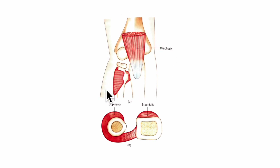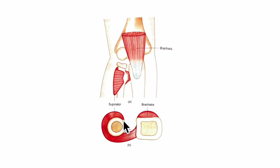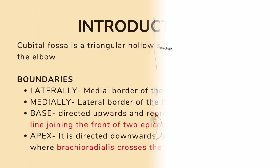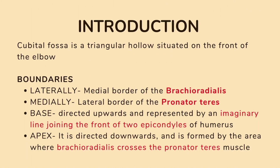Looking at the floor of the cubital fossa, in the surface view we can see that the floor is formed by the brachialis muscle and the supinator muscle that surrounds the upper part of the radius. In the cross-sectional view you can also see the supinator surrounding the upper part of the radius and the brachialis muscle.